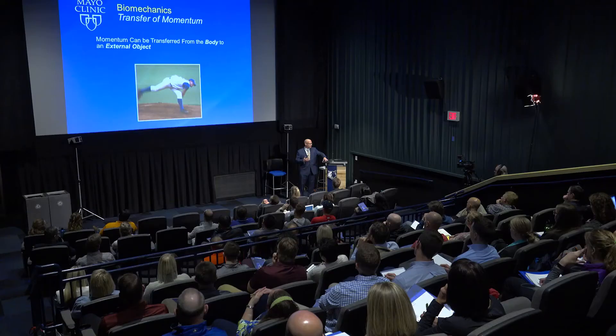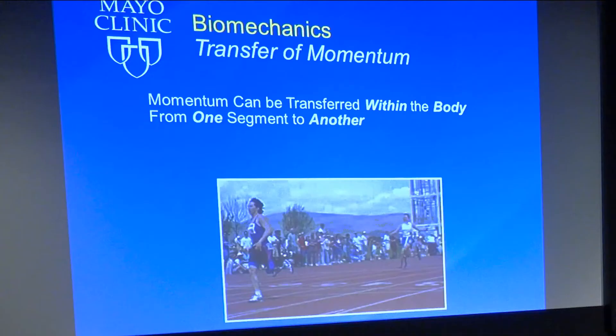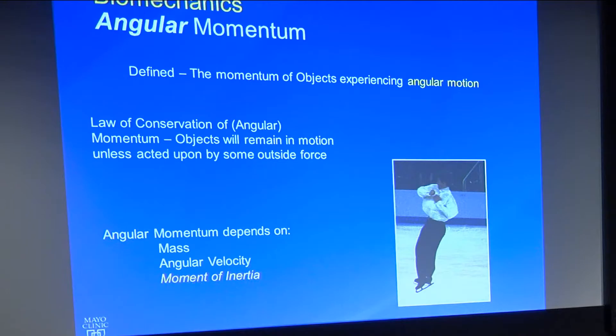Momentum is mass times velocity, so the human body possesses momentum when it is in motion — for example, landing from a jump. We're going to do a drop jump vertical test today and look at how momentum affects those values. Momentum from the body can be transferred to an object like a baseball pitch, and alterations of that momentum will change the velocity of that pitch. Momentum can also be transferred from one body segment to another, which is important in sports of all kinds.